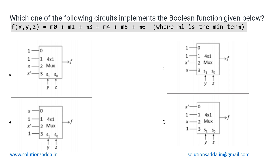This is a digital logic question based on a combinational circuit. We have been given four circuits and from that we need to determine which of them is correctly implementing the given function f. It has three variables x, y, and z, denoted using minterms. Let's first check what function we are looking for, and then look at the options to see which can implement it correctly.